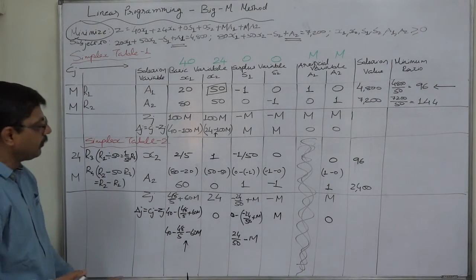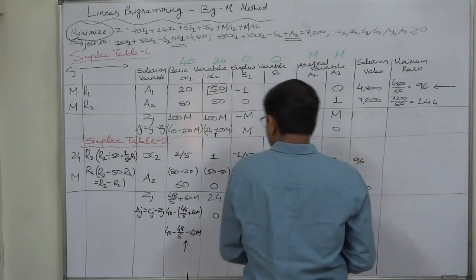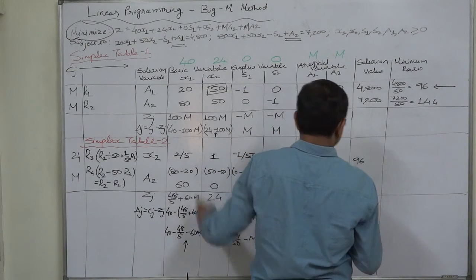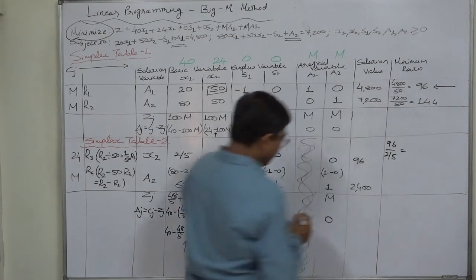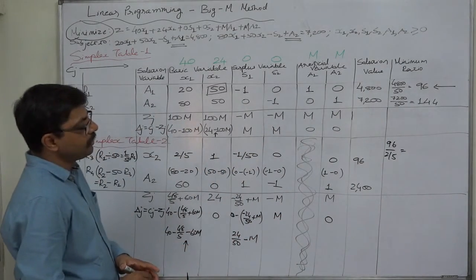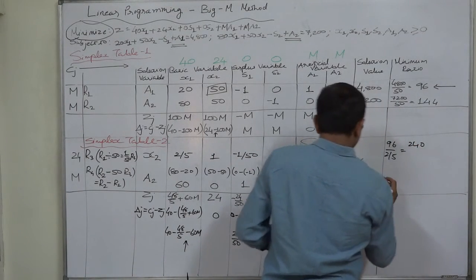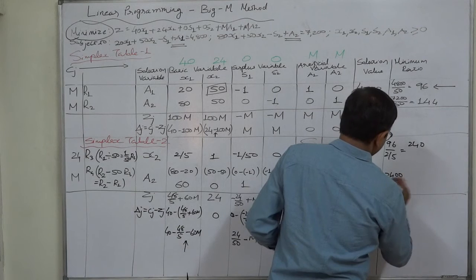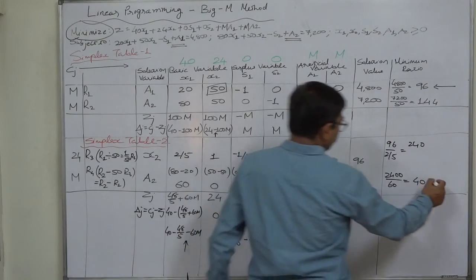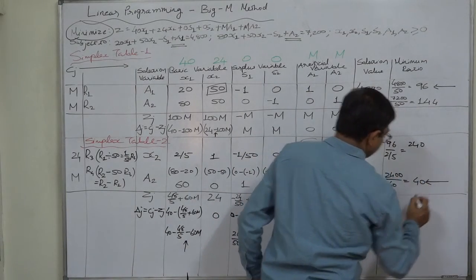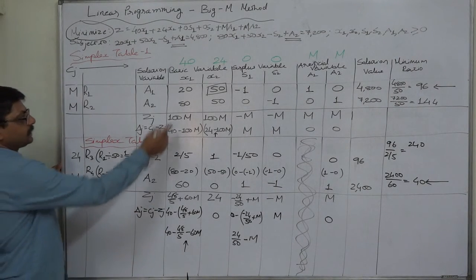We have to use the key column to divide the solution values to get the replacement or minimum ratio. 96 divided by 2/5: 96 into 5, first of all, that will be 480, divided by 2 will be 240. 2400 divided by 60, that is 40. We have to select the minimum positive ratio, so we are going to select 40. Ultimately we have selected r4 as our key row.